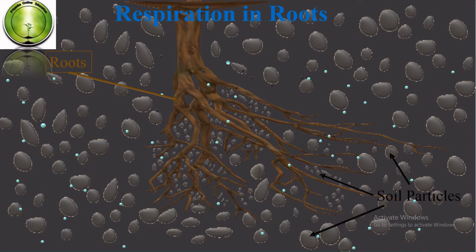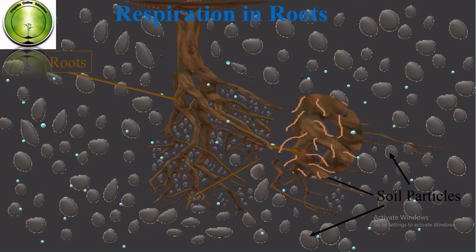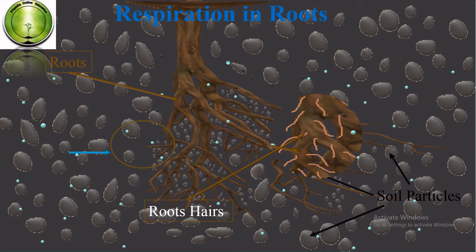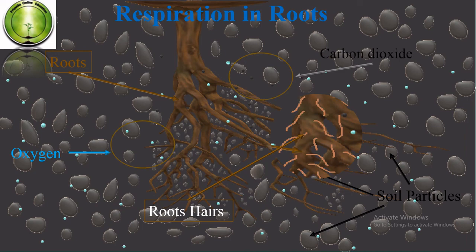As seen in the diagram, roots are surrounded by soil, and there is space between soil particles where air is present. Root hairs use this oxygen for respiration, and after respiration, carbon dioxide is released back into the soil particle spaces through the same root hairs by diffusion. Root hairs are very fine layers or fine hair-like structures.